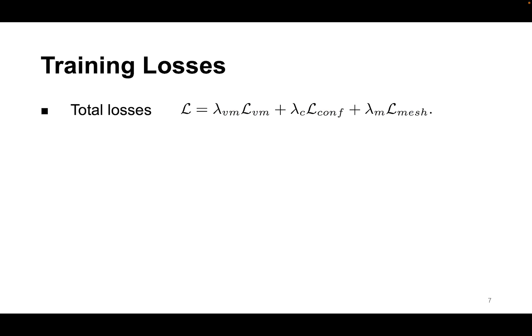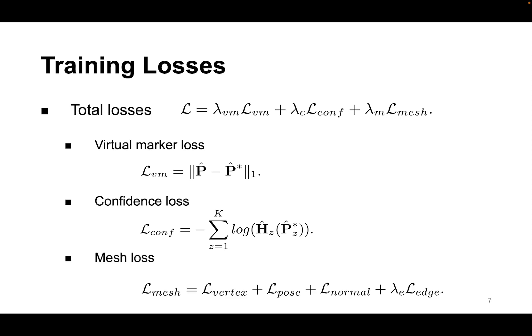The overall loss consists of three terms. We define the virtual marker loss as the L1 distance between the predicted 3D virtual markers and the ground truth virtual marker positions. Note that it is easy to get ground truth marker labels from ground truth meshes thanks to our virtual marker learning strategy. We also require that the 3D heat maps have reasonable shapes, therefore the heat map score at the voxel containing the ground truth marker position should have the maximum value.